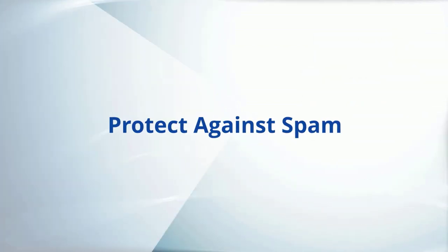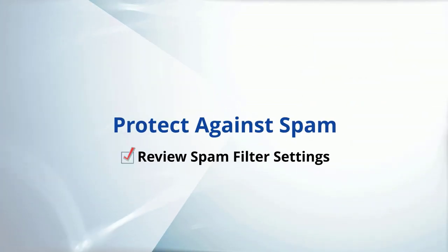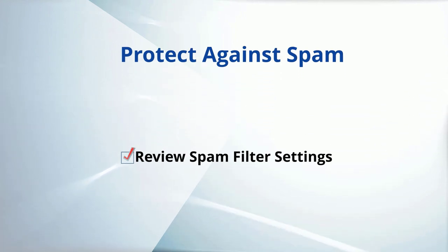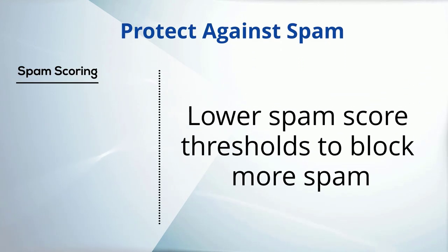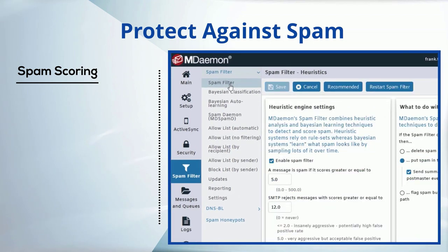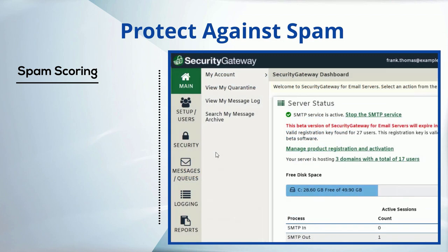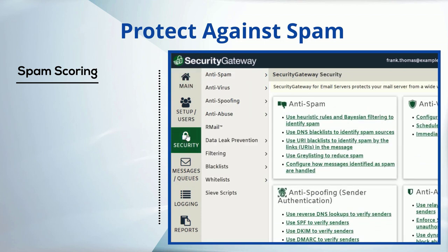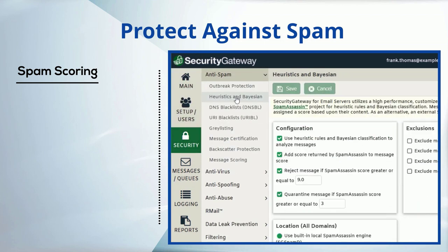To protect against spam, review your spam filter settings. If too much spam is getting through, consider lowering your spam score threshold to make your spam filter more aggressive at handling spam. In MDaemon Remote Administration, you'll find these settings under the spam filter menu, and in Security Gateway, you'll find them under Security, Anti-Spam, Heuristics, and Bayesian.